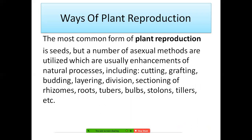The most common form of plant reproduction is seeds, but a number of asexual methods are also utilized, which include cutting, grafting, budding, layering, division, sectioning of rhizomes, roots, tubers, bulbs, stolons, tillers, etc. Plants that reproduce through seeds use sexual reproduction. But not all plants have seeds — for example, potato, beetroot, sweet potato, and rose do not have seeds. These plants reproduce through asexual methods, meaning they reproduce through stems, roots, or leaves.